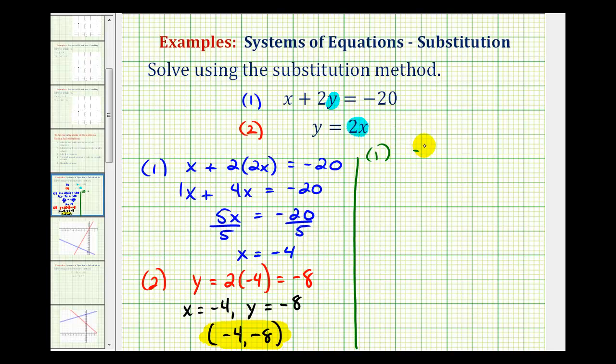So using equation one, we would have negative four plus two times negative eight equals negative 20. Let's make sure this is true. We'd have negative four plus negative 16, and negative four plus negative 16 is negative 20, so this checks.